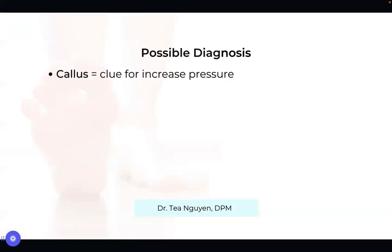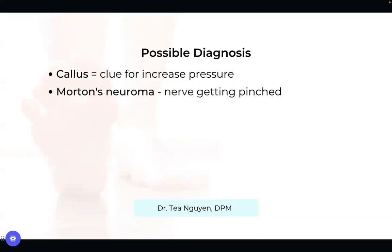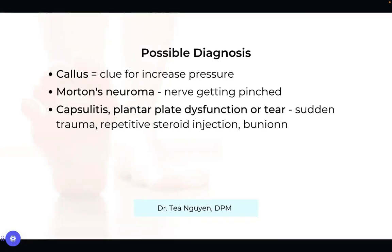The first cause is a callus. A callus can cause pain and forms when there is hard tissue at an area of high pressure — that's a clue that something is going on with your foot. Another diagnosis is Morton's neuroma, where the nerve between the metatarsals gets pinched, whether by a shoe or something else, causing inflammation and pain. Capsulitis and plantar plate dysfunction or complete tear are grouped together because they are in the relative same place anatomically, and can happen from direct trauma, repetitive steroid injections, or even a bunion deformity.